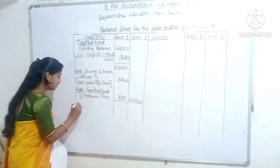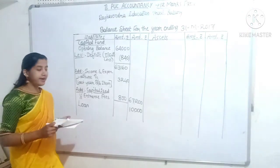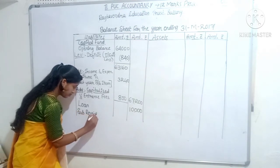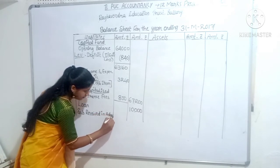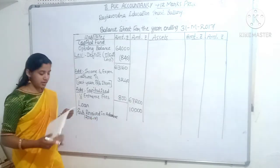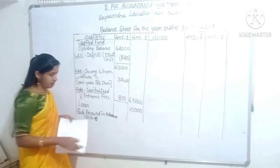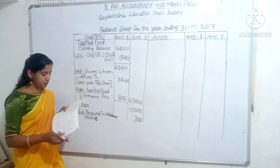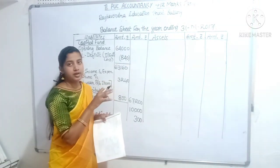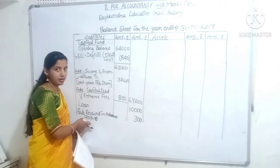Then, balance sheet liability side: loan item Rs. 10,000. Additional information mentions subscription received in advance for 2016-17 - received in advance amount is a liability side entry. Subscription received in advance Rs. 300.